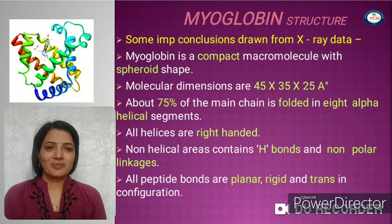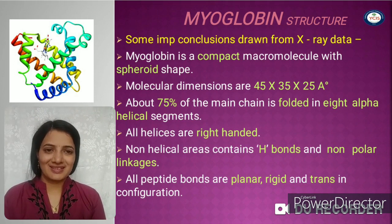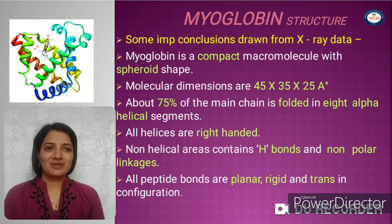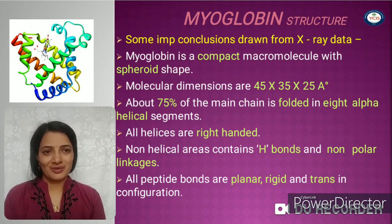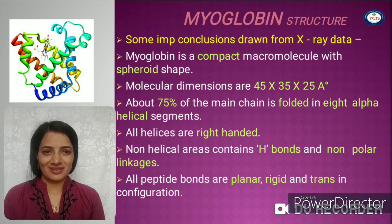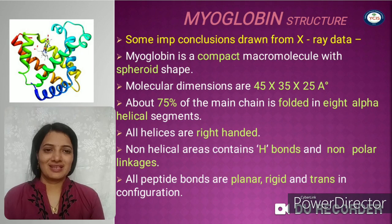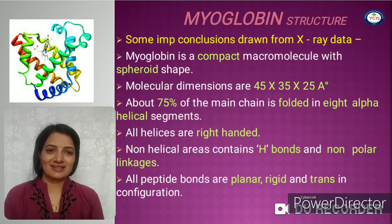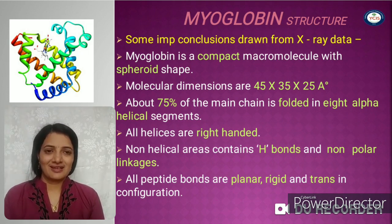Some important conclusions drawn from X-ray data: Myoglobin is a compact macromolecule with a spheroid shape. Its molecular dimensions are 45 × 35 × 25 Angstroms. Near about 75% of the main chain is folded into alpha helices. All alpha helices are right-handed, and other regions of the polypeptide chain are present as well.